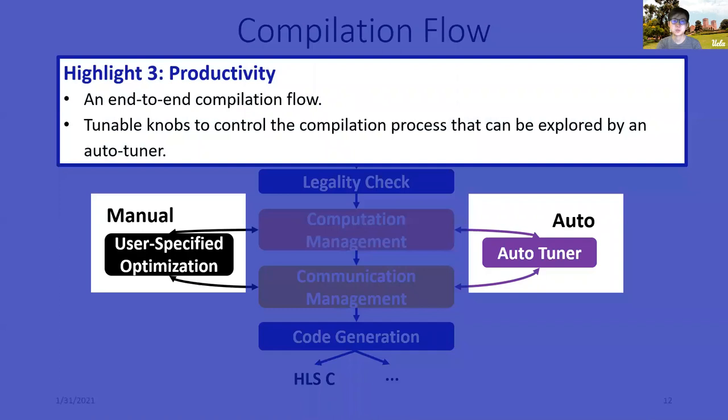Lastly, AutoSA boosts productivity by providing an end-to-end compilation flow. In addition to that, it implements many tuning knobs for each compilation step to control the compilation process. These knobs can either be explored by programmers manually or explored by an autotuner to search the design space automatically. In the next few slides, we will dive further to introduce more details about the compilation flow.